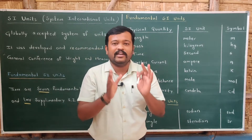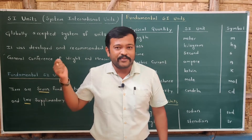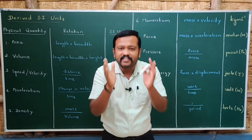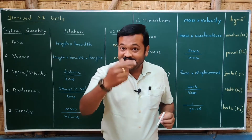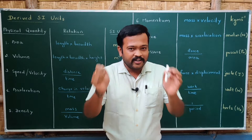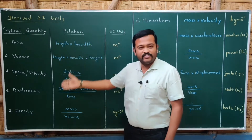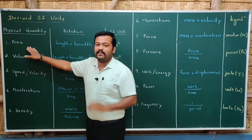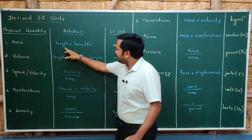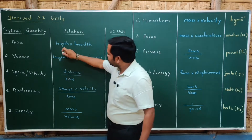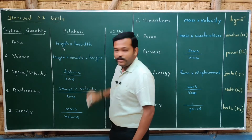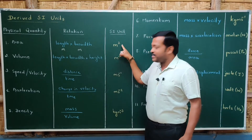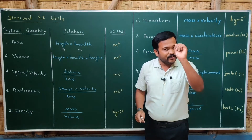Now let us move on to derived SI units. Derived physical quantities are quantities derived from fundamental physical quantities, and their SI units are called derived SI units. Let us start with area. Area is calculated by multiplying length into breadth. The unit of length is meter and the unit of breadth is meter, so the unit of area is meter × meter — that is, square meter (m²).